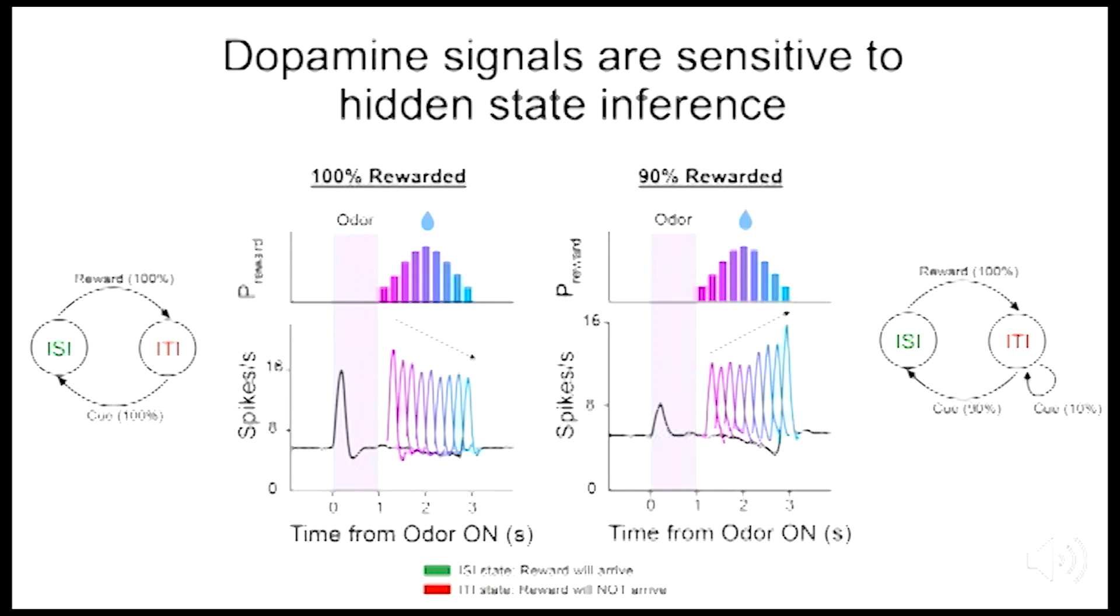So in the 100% rewarded task, the belief state is uniformly fixed with 100% probability in the rewarded state after cue onset. Whereas in the 90% rewarded task, by analogy to the dive bar example, the belief state becomes more and more pessimistic over time, resulting in decreased expectation and a higher dopamine signal if reward actually arrives later.